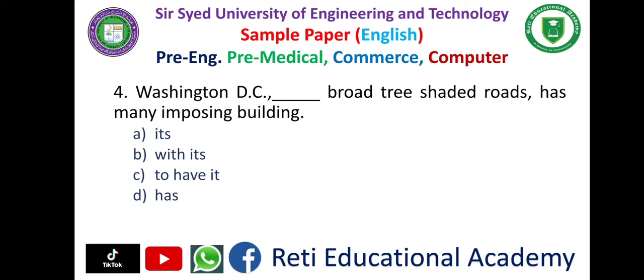Question number four. 'Washington DC dash broad tree-shaded roads has many imposing buildings.' A. It's. B. With its. The correct answer is B. Washington DC with its broad tree-shaded roads has many imposing buildings.